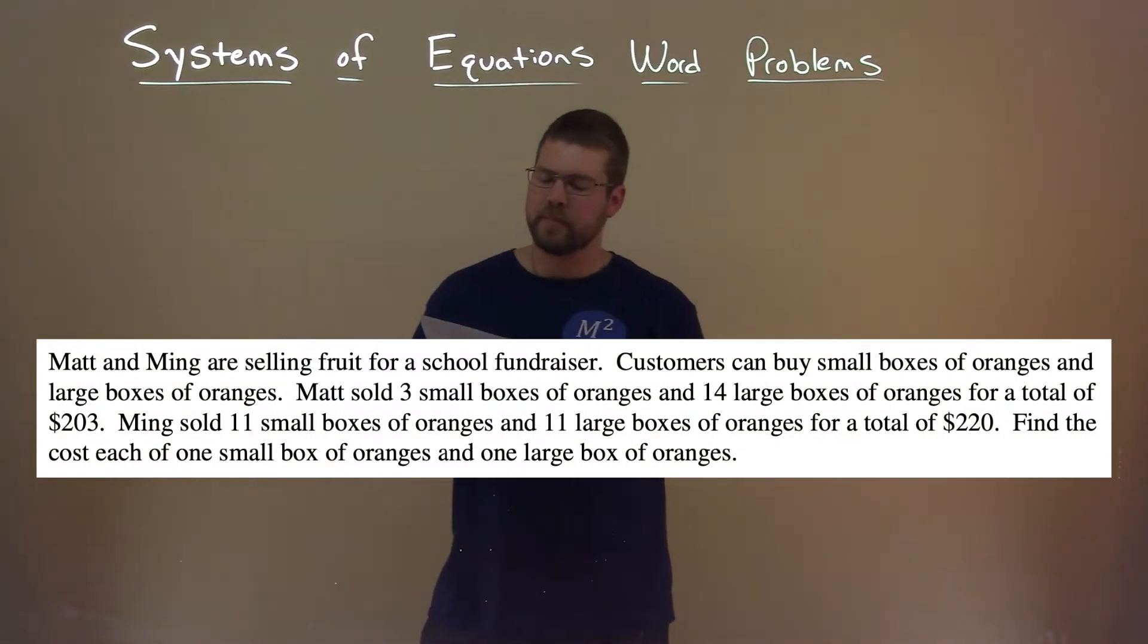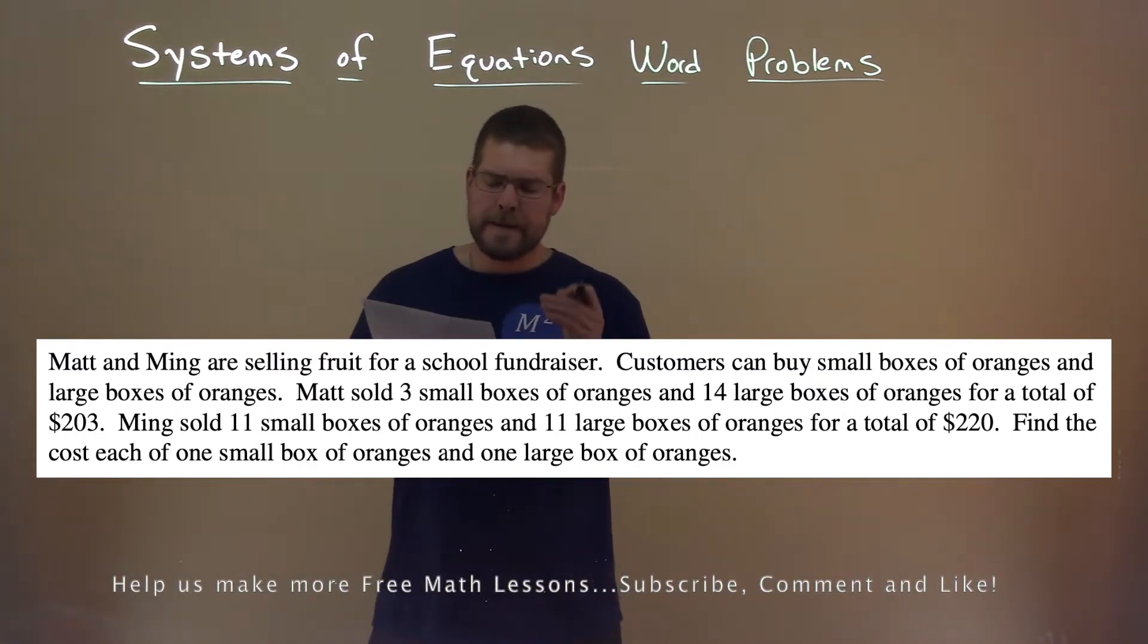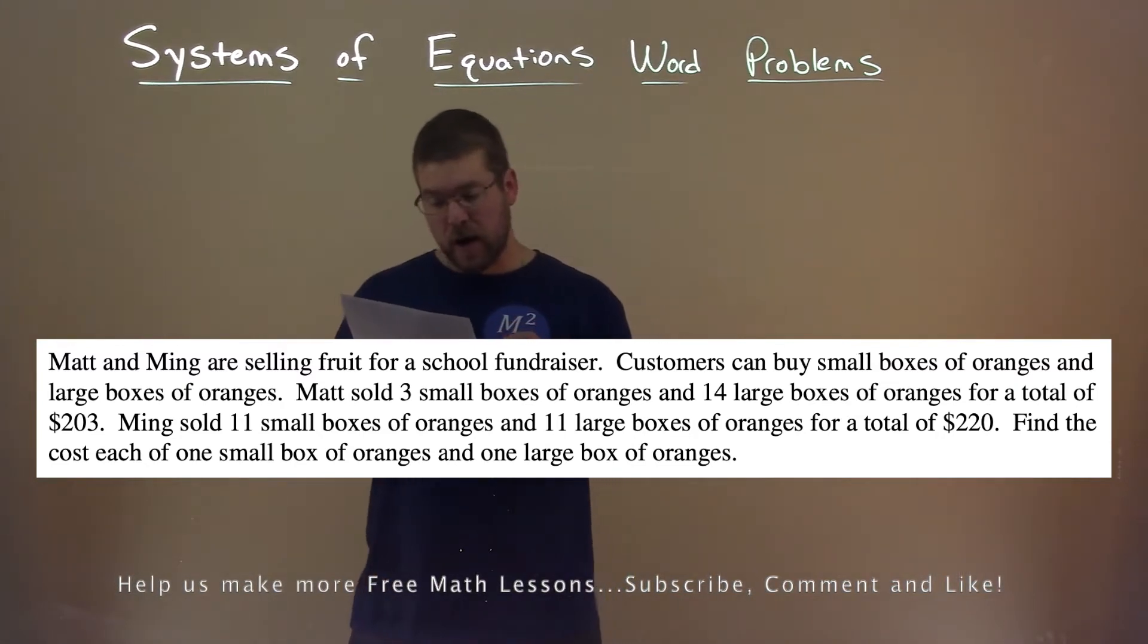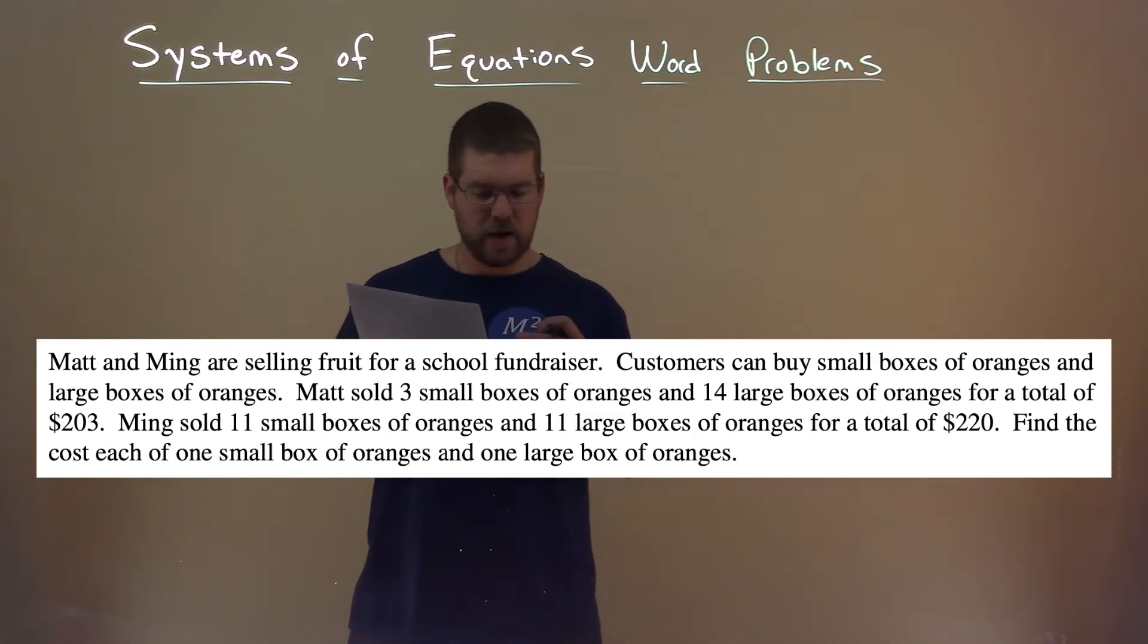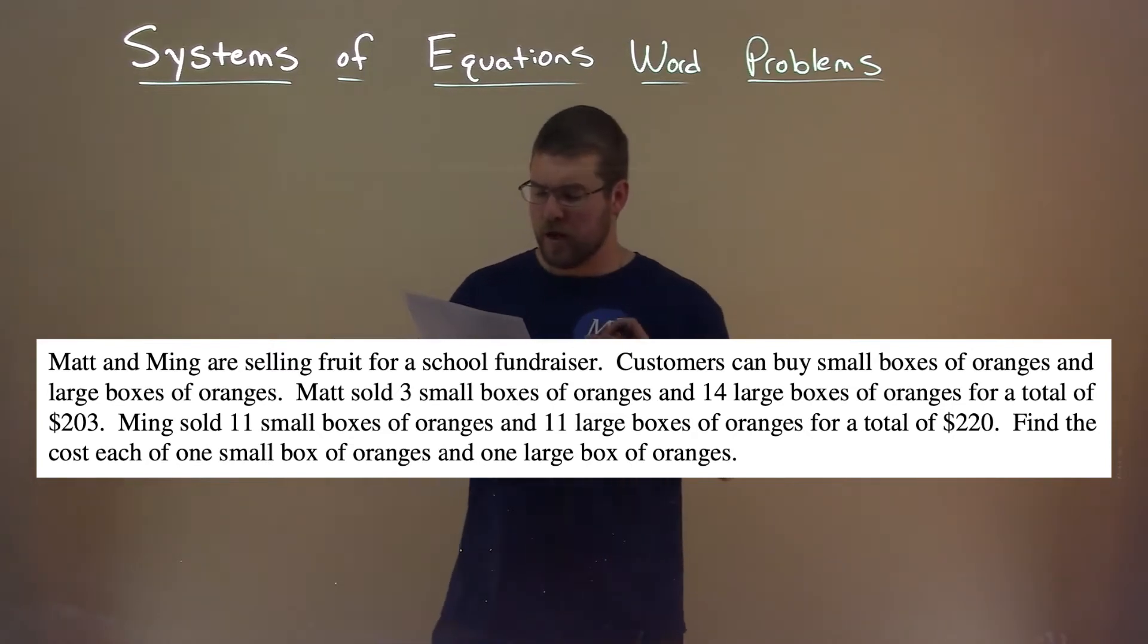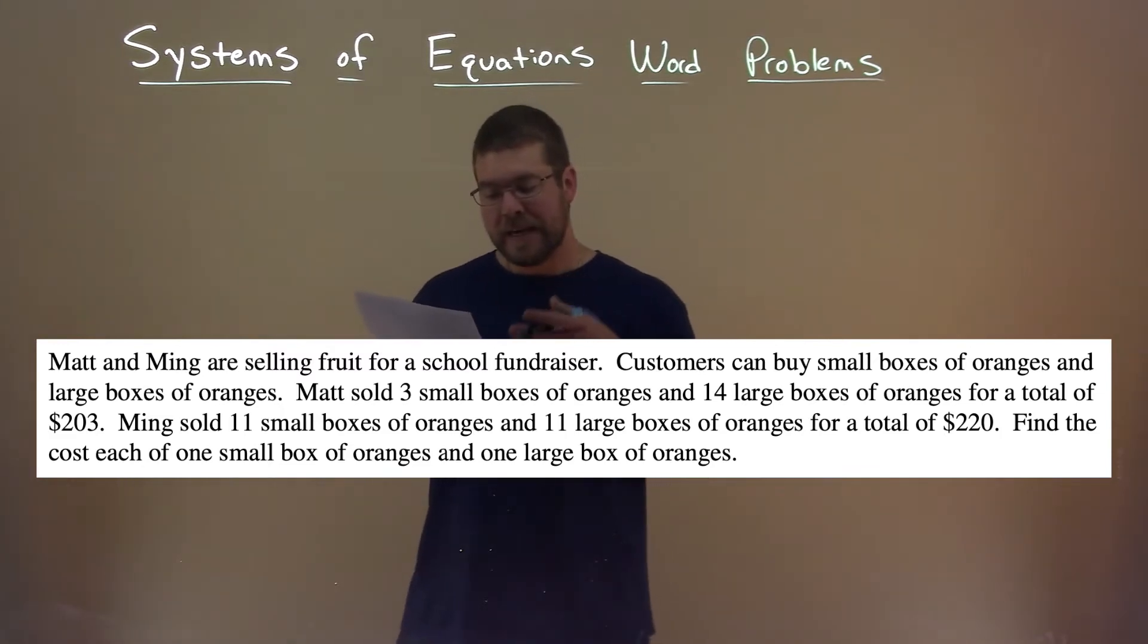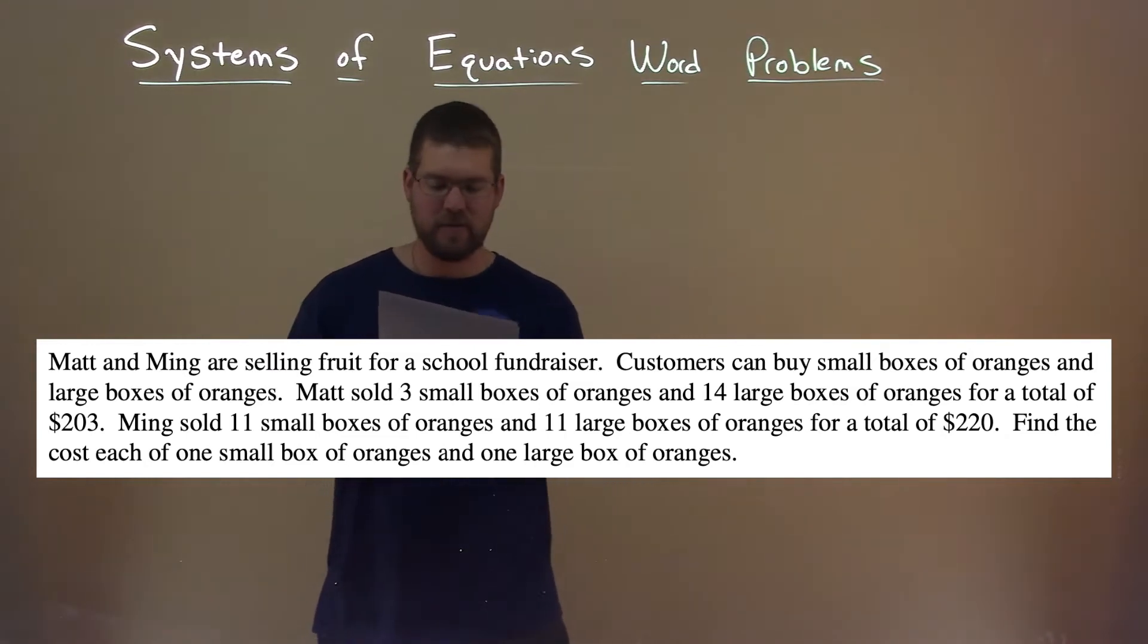We're given this problem here. Matt and Ming are selling fruit for a school fundraiser. Customers can buy small boxes of oranges and large boxes of oranges. Matt sold 3 small boxes of oranges and 14 large boxes of oranges for a total of $203. Ming sold 11 small boxes of oranges and 11 large boxes of oranges for a total of $220. Find the cost of each of 1 small box of oranges and 1 large box of oranges.